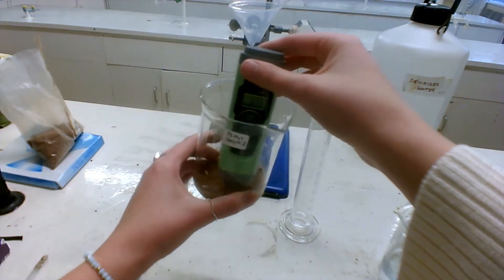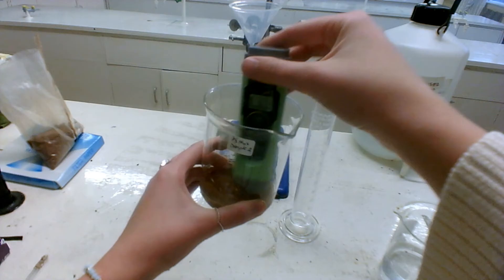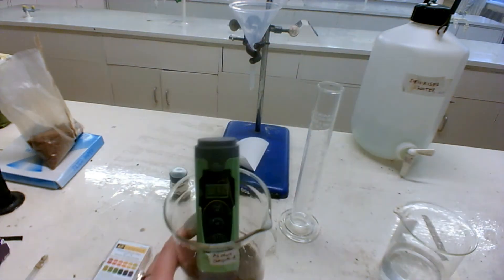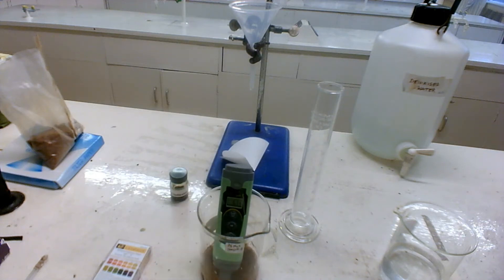So having stirred it around a bit, the pH is actually not changing that much. It's at a pH of 6.7. So ideally for farmers, the pH should be between 6.5 and 7.5 for optimum crop growth.